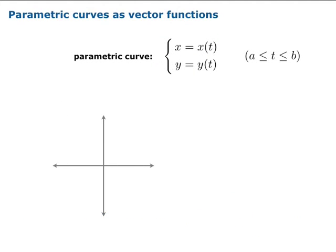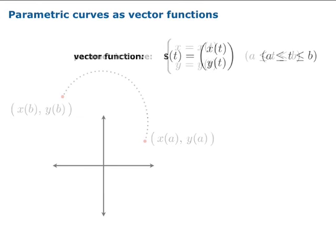You've studied parametric curves before, which is simply a pair of functions that give you x and y coordinates at various times. If you were to plot such a curve, you would think of a particle moving through the plane from time t equals a to t equals b. If you allow a vector function to do the same thing, you're going to get exactly the same picture.